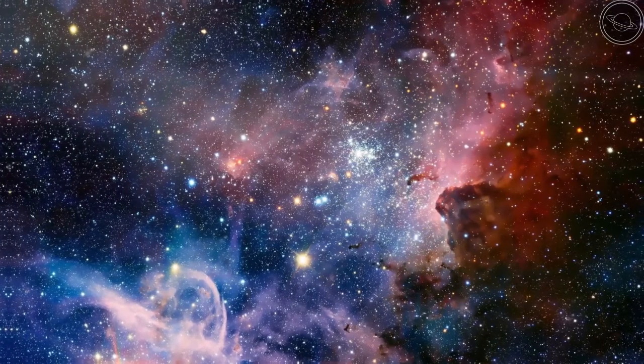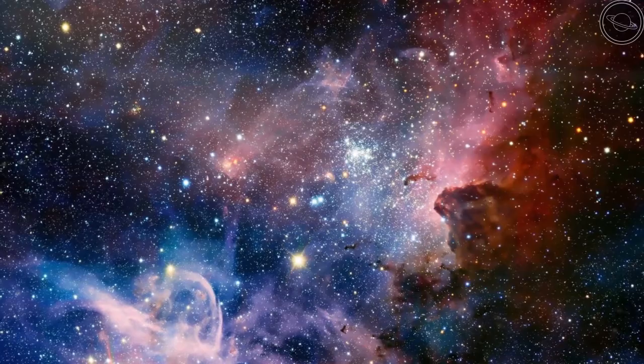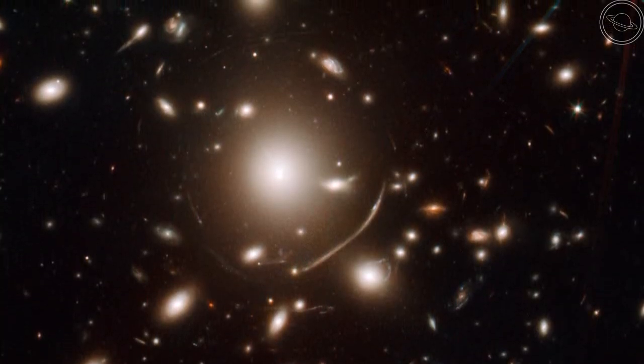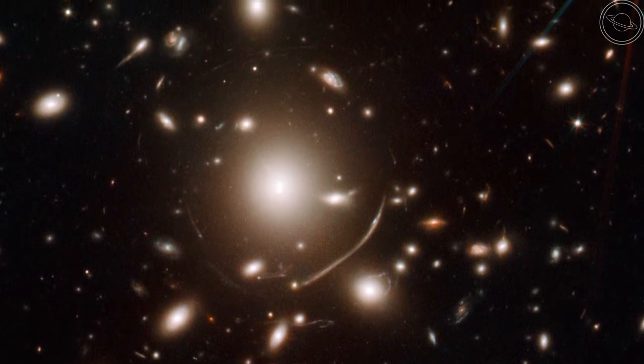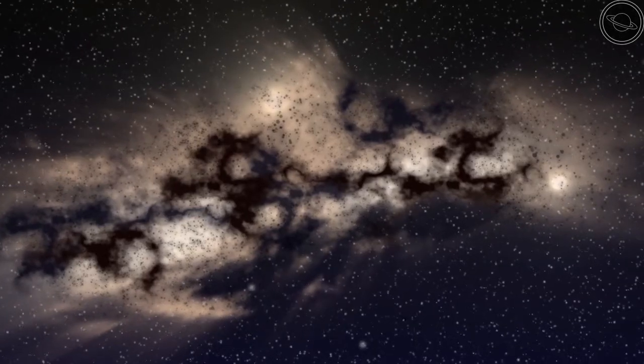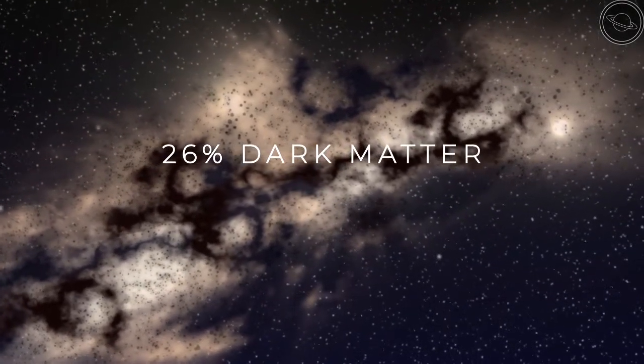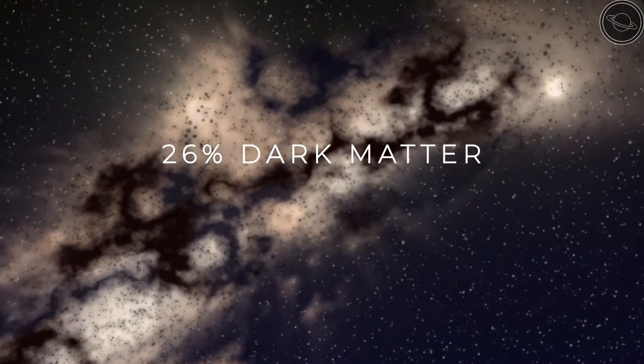If there was only normal matter in the universe, then this light would not have been bent to such an extent. So, depending on how distorted the distant galaxy appears, we'll show how much dark matter lies in that individual galaxy. From these measurements, we were able to work out that the universe is made up of 26% dark matter, five times the amount of normal matter in the universe.